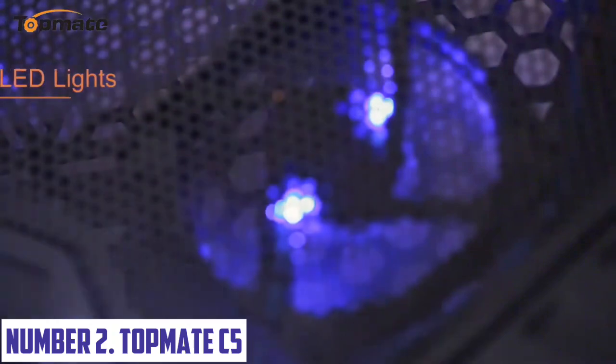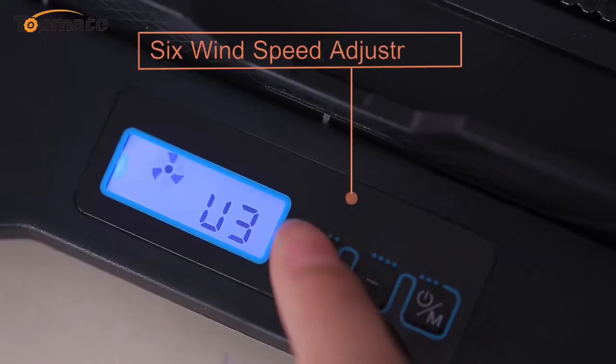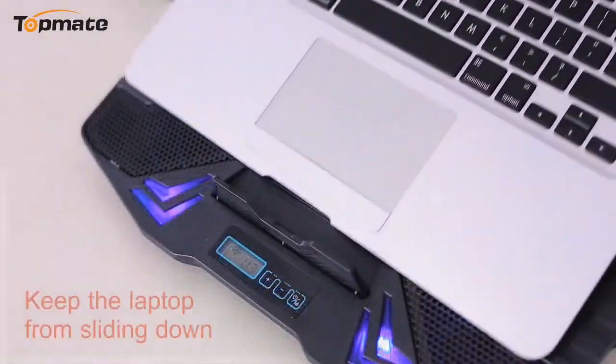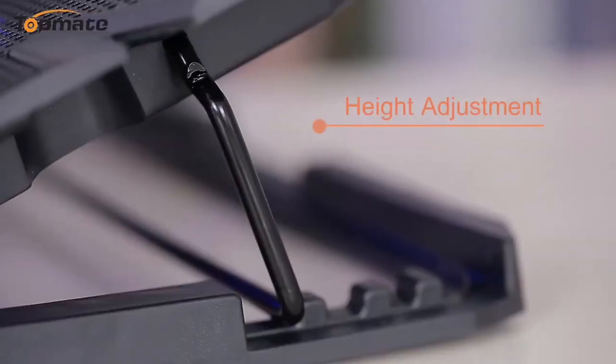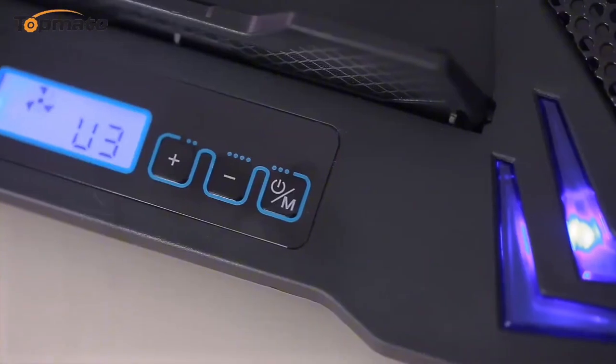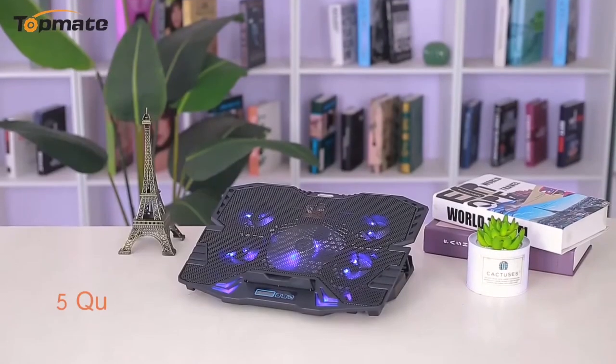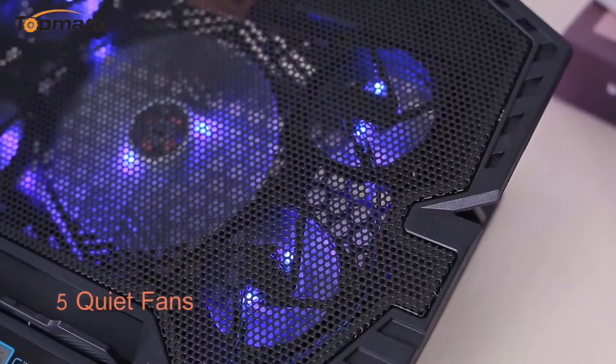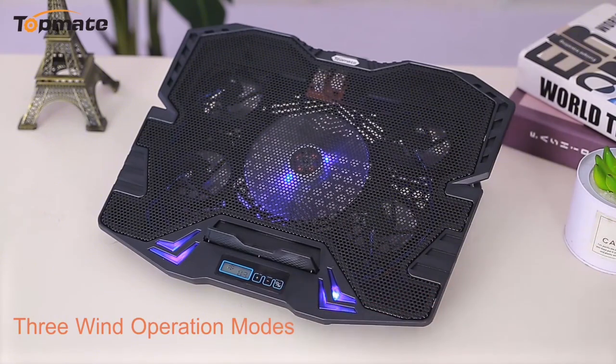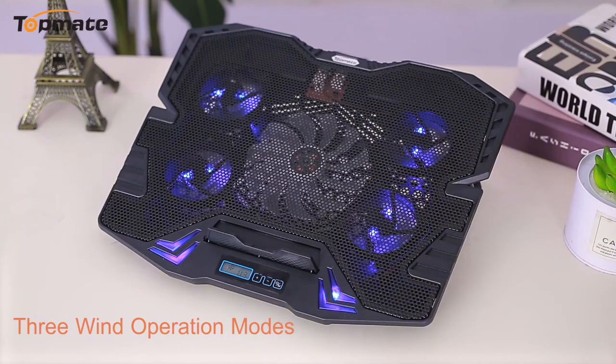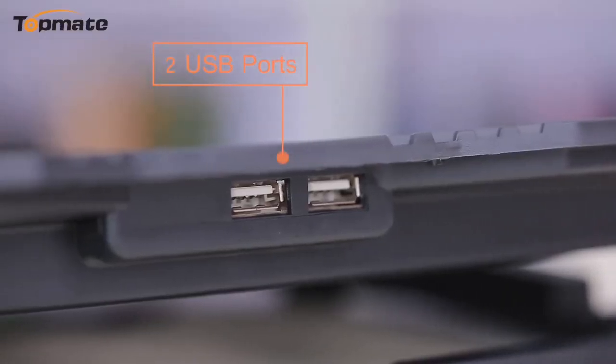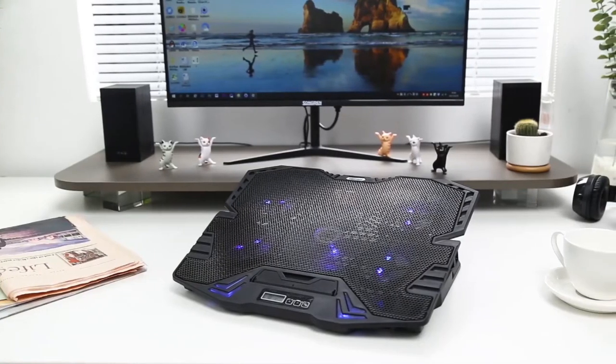Number 2. Topmate C5. Elevate your audio experience with the Topmate C5, a cutting-edge wireless earbuds designed to provide unparalleled sound quality, comfort, and convenience. These sleek earbuds boast a compact design, weighing in at just 4.5 grams, making them perfect for daily use. The C5 features advanced noise cancellation technology, effectively blocking out ambient noise and allowing you to focus on the rich, detailed sound. With a frequency response of 20 Hz to 20 kHz, you'll be treated to a wide range of frequencies, ensuring a more immersive listening experience. The C5 also comes equipped with a powerful 12-hour battery life, providing hours of uninterrupted listening pleasure. The earbuds also feature a fast-charging function, allowing you to quickly top up the battery when needed.